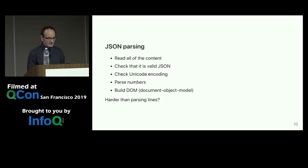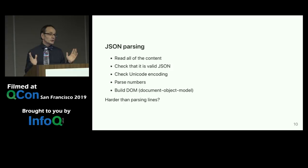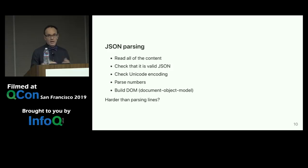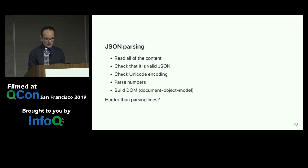I'm going to focus on JSON parsing — it's important to define what I mean because it could mean different things. What I mean is: you read all the content, check that it's valid per specification, check that the encoding is correct, ensure you have proper strings, parse the numbers, and build some kind of tree data structure — a document object model. This is a little bit harder than parsing lines in a text file, so it should be a little bit slower.